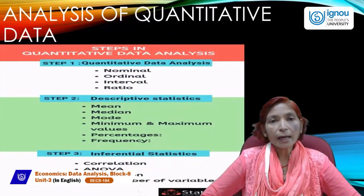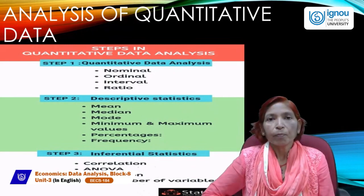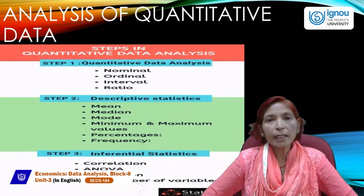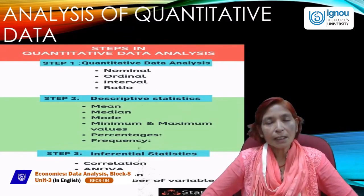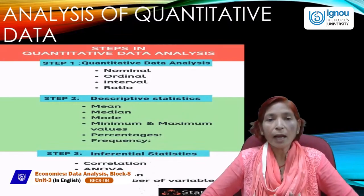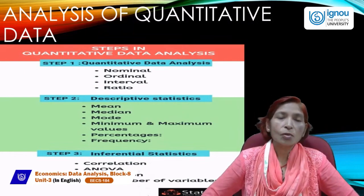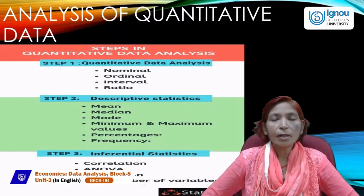ANOVA explains the analysis of variance. Variance tells us the variability of data — what type and how much variability exists. We can calculate variance with the help of standard deviation. Variance is the square of standard deviation. When we study the analysis of variance, that is called ANOVA.